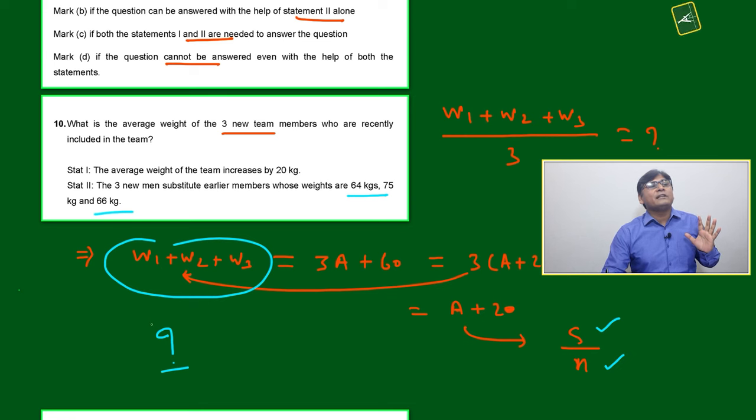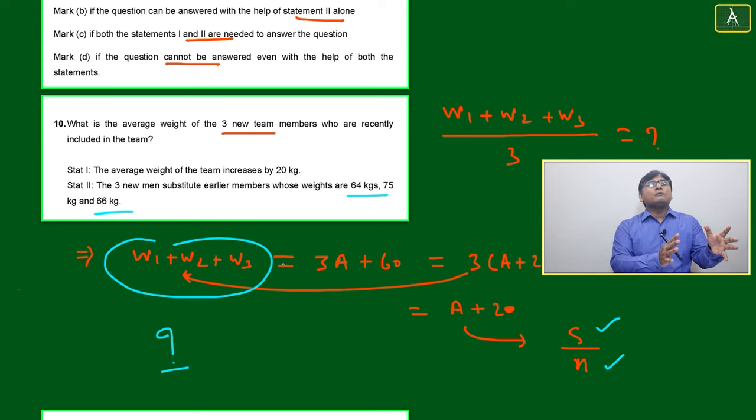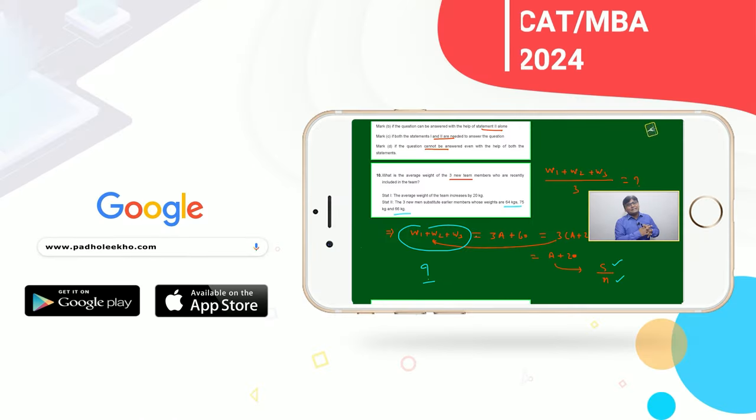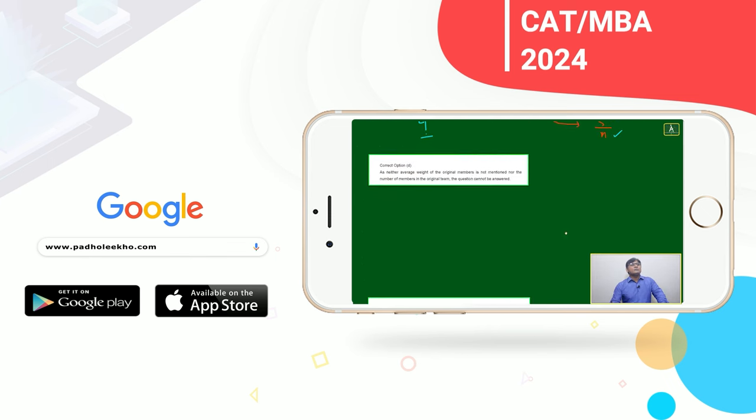If you are merging statement 1 and statement 2, then also you will not be able to get the idea about W1, W2, W3. You are only getting the idea in which place W1, W2, W3 has come. That person's weight was 64, 75, and 66. These three weights are replaced by W1, W2, W3. Means we can say D answer most likely.